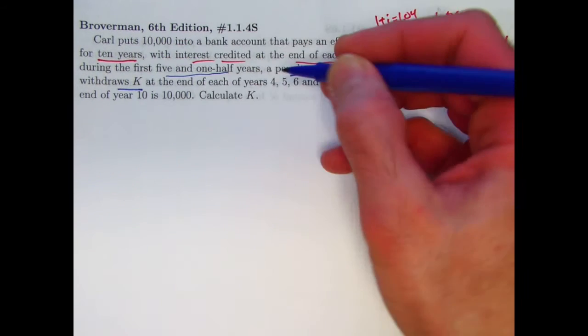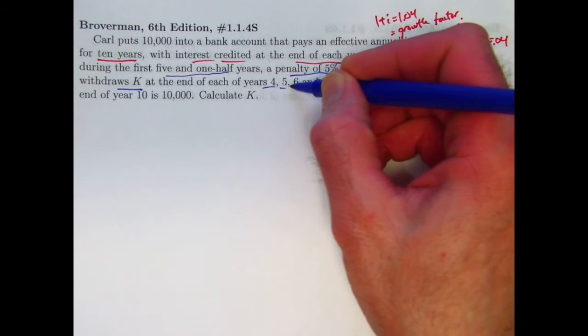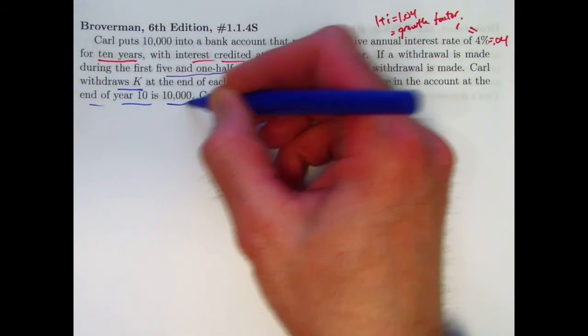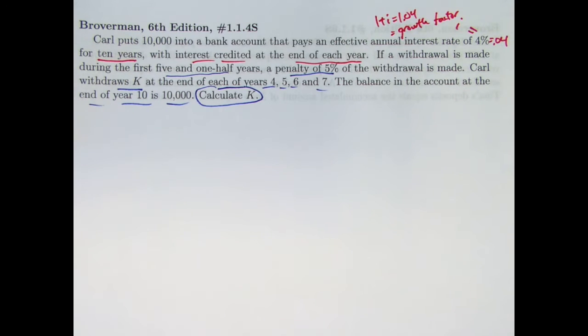Carl withdraws K, K is the unknown amount we want to solve for, at the end of years 4, 5, 6, and 7. The balance at the end of year 10 is 10,000. The goal here is to calculate K. That is our goal.